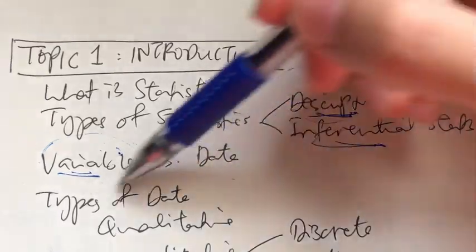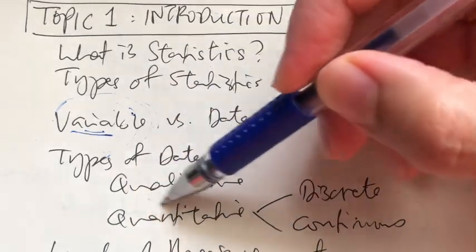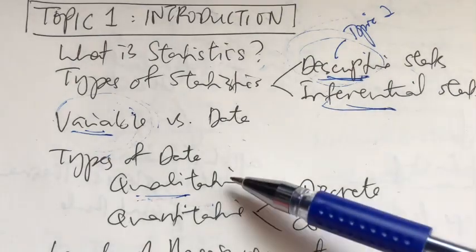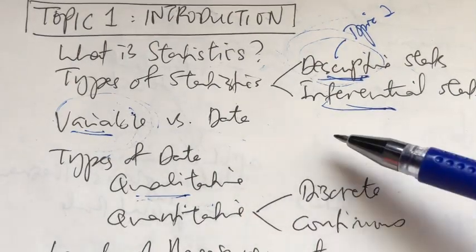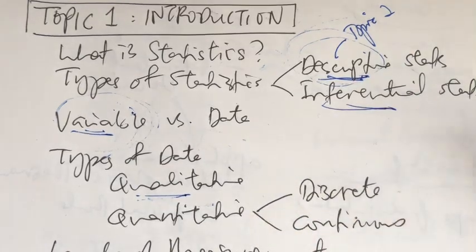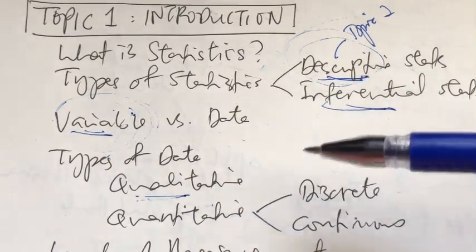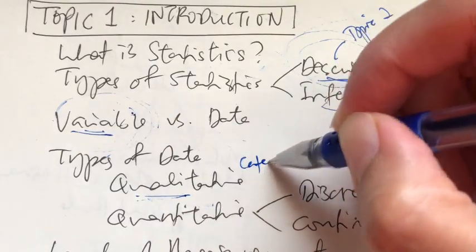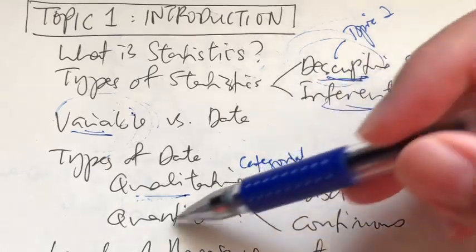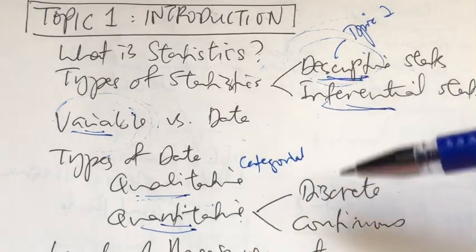We also learned about the different types of data. There are two types. The first is qualitative data, from the root word 'quality' — this data cannot be measured numerically. We measure it using names, labels, or categories. That is why qualitative data is also known as categorical data. The second type is quantitative data, from the root word 'quantity,' meaning the data can be measured numerically.